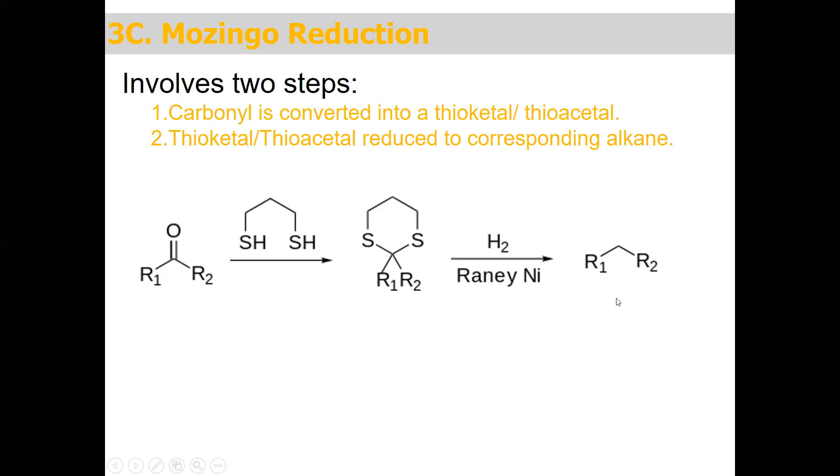This thioketal or thioacetal is then reduced with hydrogen in the presence of a catalyst to give the corresponding alkane. These are the two main steps of Mozingo reduction.